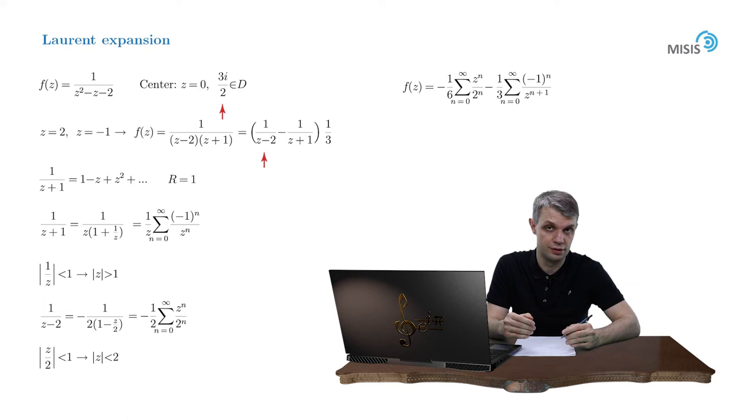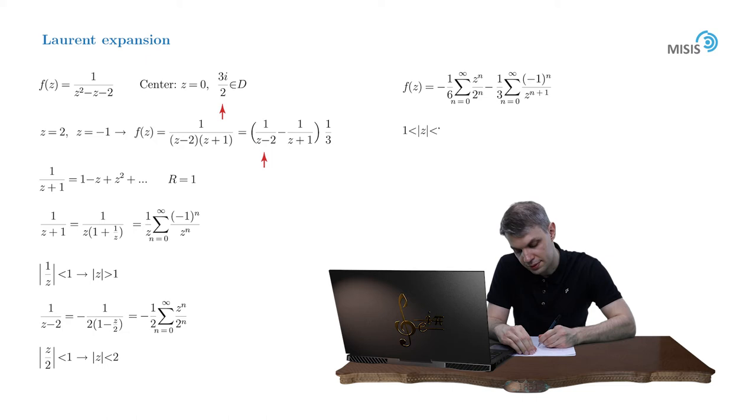So we are able to describe the annulus of convergence of our Laurent expansion. Namely, its inner radius is equal to 1, and its outer radius is equal to 2. And this completes our task.